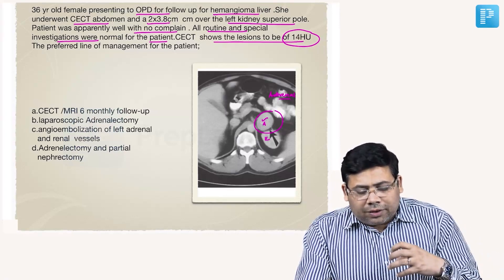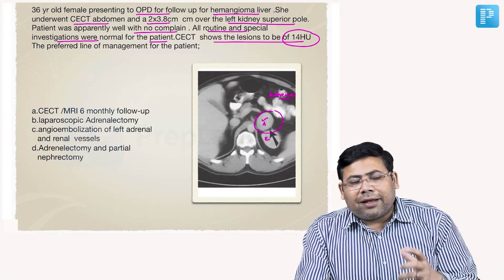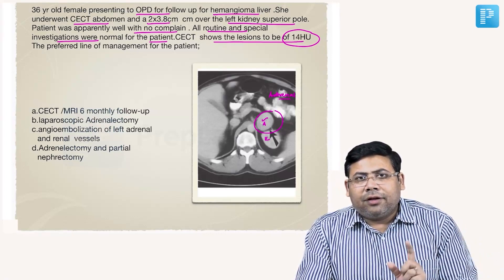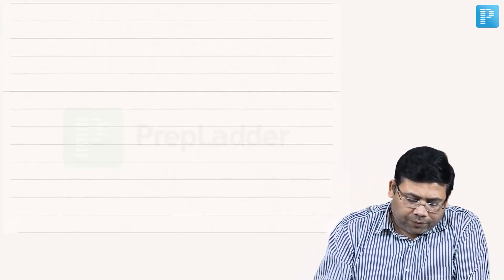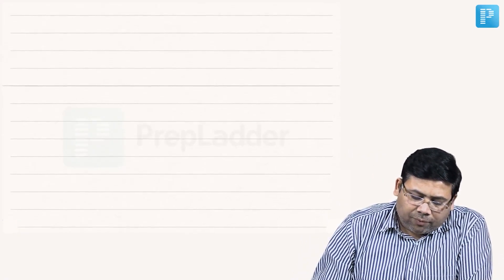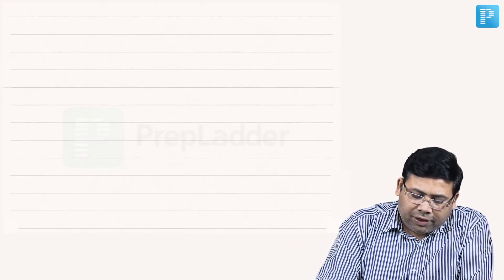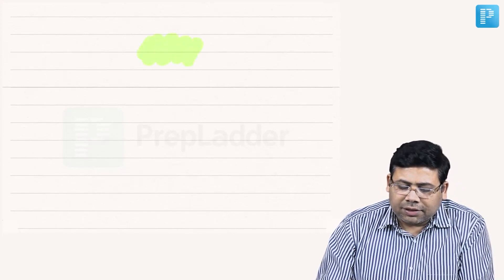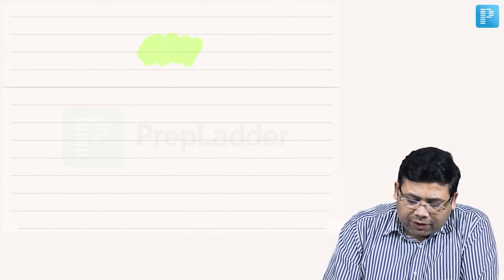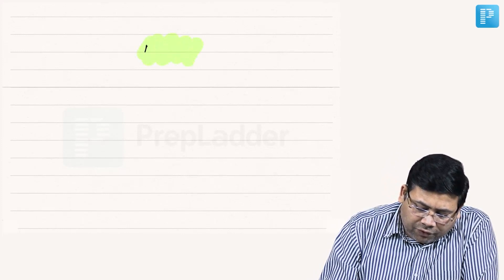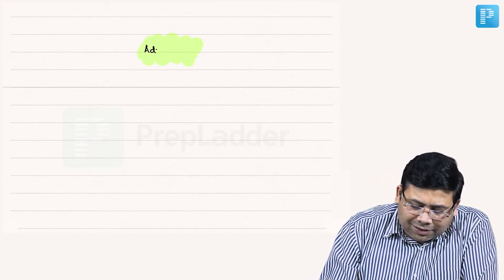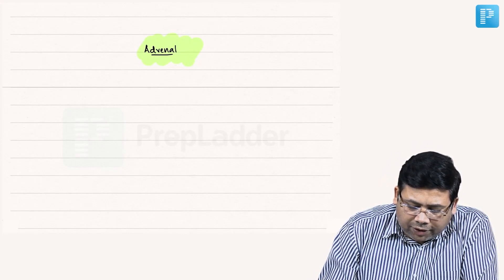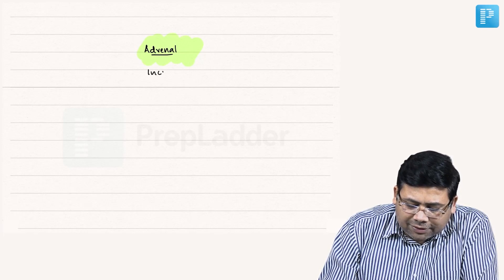So it's an incidentally detected tumor — hence it's an adrenal incidentaloma. What is the algorithm for management of adrenal incidentaloma? This is very simple. Whenever we talk about an incidentally detected adrenal tumor, we call it adrenal incidentaloma.